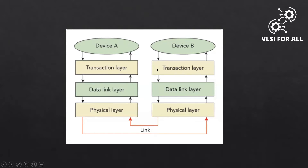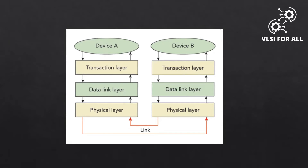Coming to the layers — if two devices need to communicate through PCIe, they need a link. PCIe is a dual simplex connection, meaning we have two simplex connections between the two devices. In each simplex connection there is a transmitter and a receiver, and that connection is called a link. Within the links we have lanes — each link consists of multiple lanes: x1, x2, x4, x8, etc., according to the requirement. The link is the physical connection between two devices.